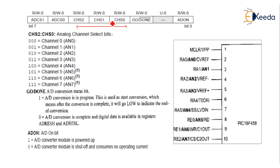If the channel select bits are 0-0-0, it selects channel 0, which is AN0. If it is 0-0-1, it selects channel 1, which is AN1. Port A and Port E are assigned for analog inputs.